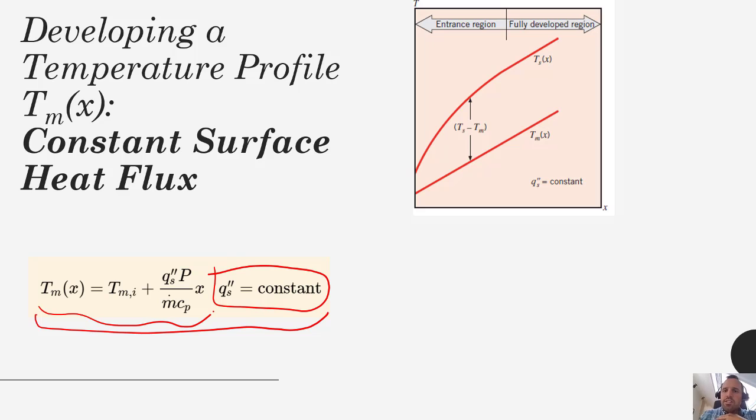Here's how that may look. Here is our temperature profile, t mean as a function of x. If you have constant flux and you also have an entrance region where your h may be changing, that implies that your surface temperature changes.